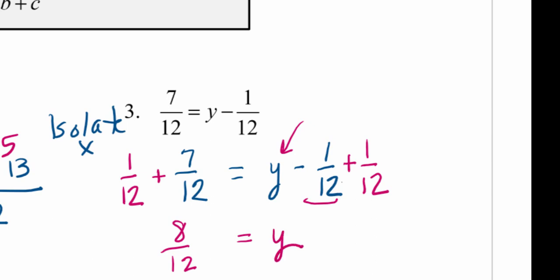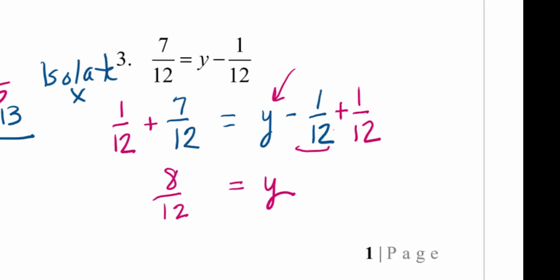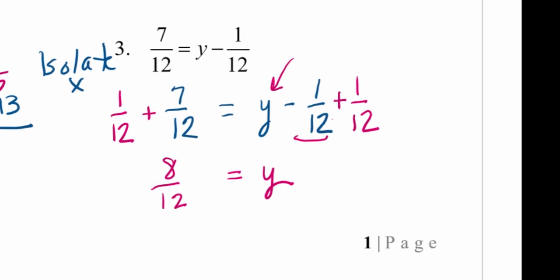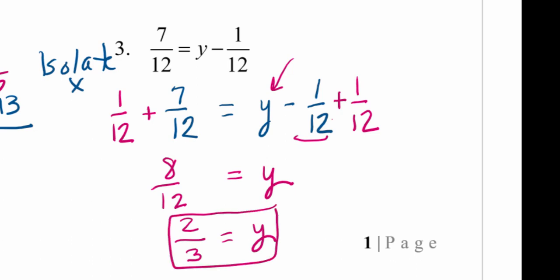We have y equals 8/12, but we're not done — we need to reduce to lowest terms. There's a common factor of 4 in both the numerator and denominator, so we divide 8 by 4 to get 2 and 12 by 4 to get 3. So y equals 2/3 is our answer. We can verify: when we subtract 1/12 from 2/3, we get 7/12.